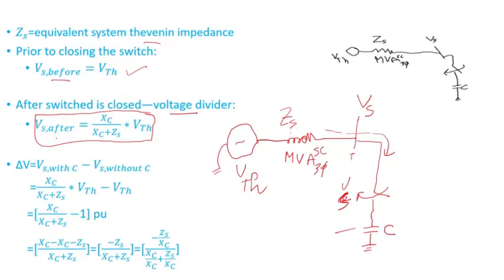The voltage difference is VS with the capacitor bank switched in minus VS without the capacitor bank switched in. If you substitute each term with its equation and write it in per unit — ignoring V-Thevenin — you get this term. Then putting both sides on the same common denominator, XC cancels out and you get negative ZS divided by XC plus ZS.